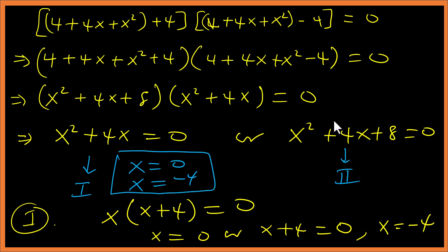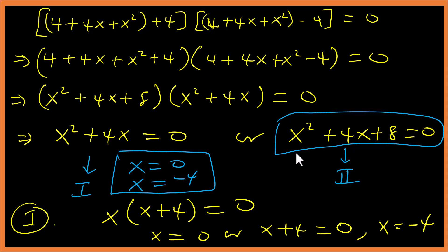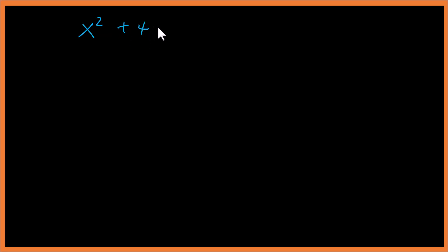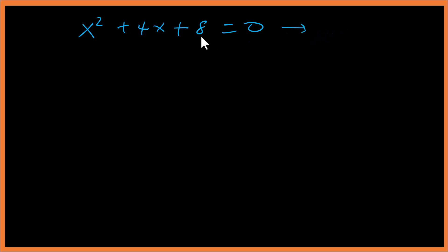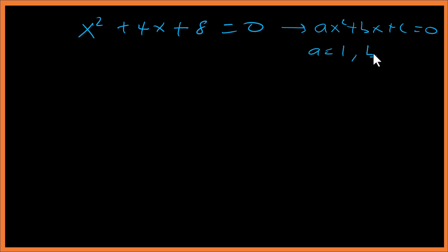Now let's go ahead and solve equation II: x² + 4x + 8 = 0. Comparing with the general quadratic equation ax² + bx + c = 0, we have a = 1, b = 4, and c = 8.